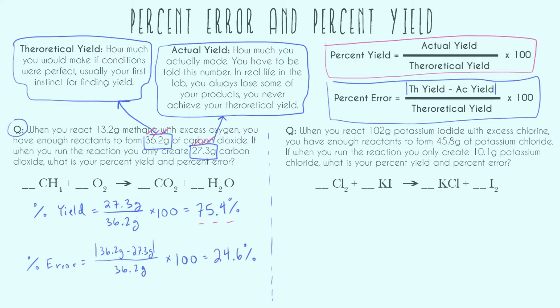All right, let's go ahead and do our second problem. When we react 102 grams potassium iodide with excess chlorine, you have enough reactants to form 45.8 grams of potassium chloride. So this is our theoretical yield, how much we could make if we had perfect conditions. If when you run the reaction, you only create 10.1 grams potassium chloride, what's your percent yield and percent error?